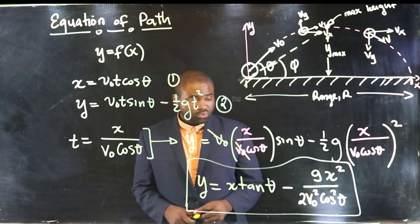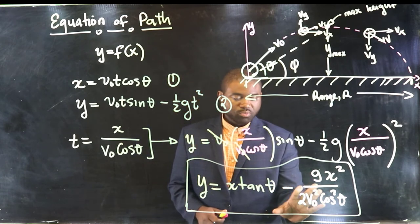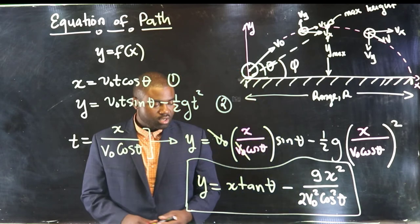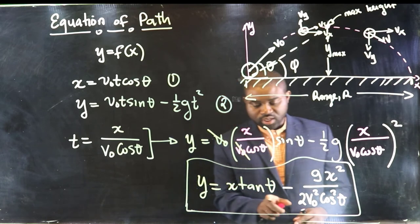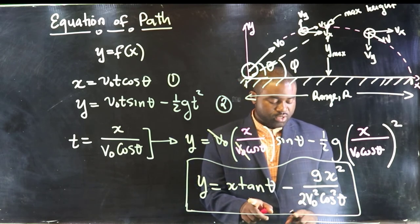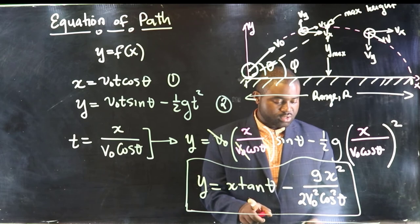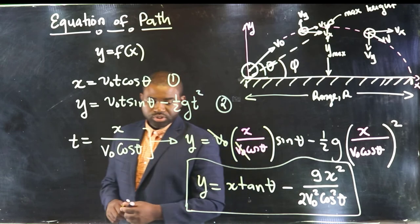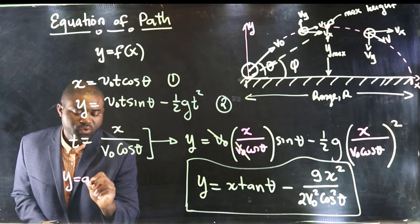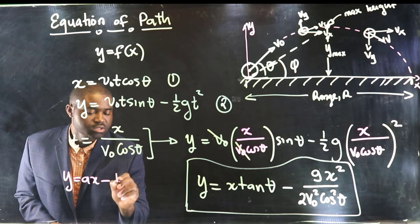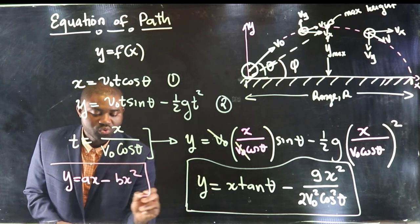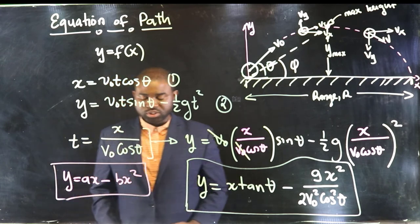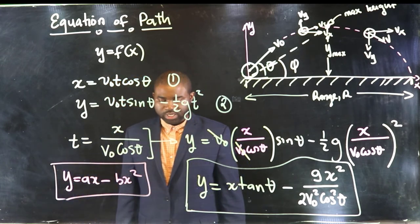But the most crucial thing that is important for you to see, I'm going to translate this equation in a way that you can see it pretty much clearly. You will notice that tan θ is just a constant. G is a constant. V₀ is a constant. And cos θ is a constant. So, if I represent that equation as y equal to ax minus bx squared, you can quickly see that this is the equation of a parabola.